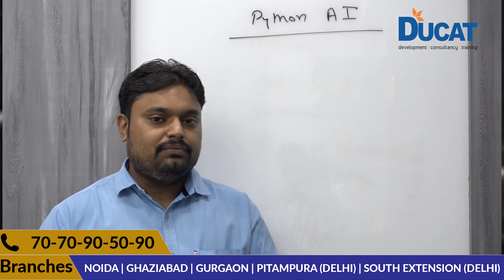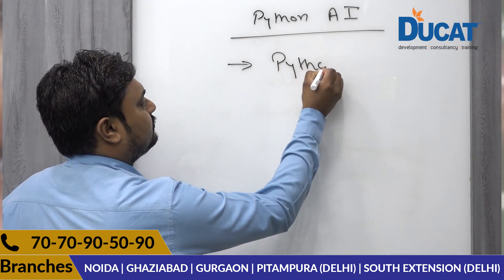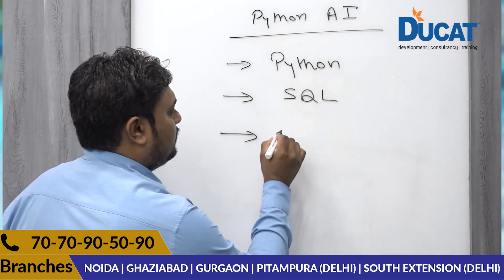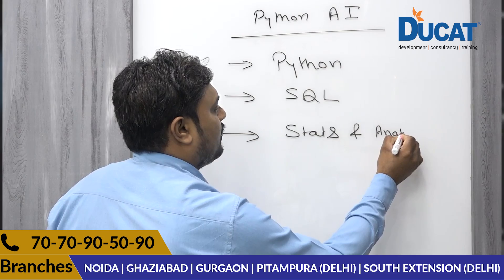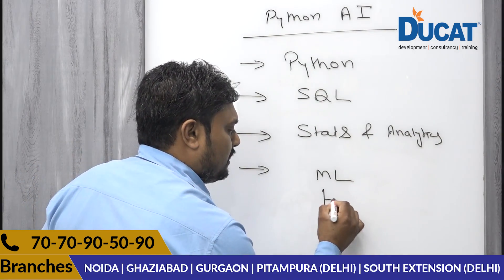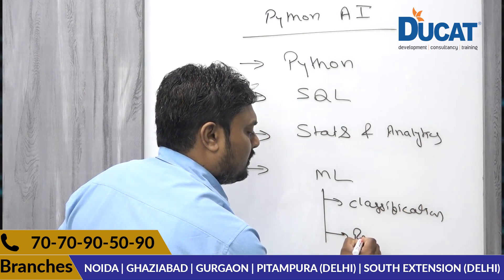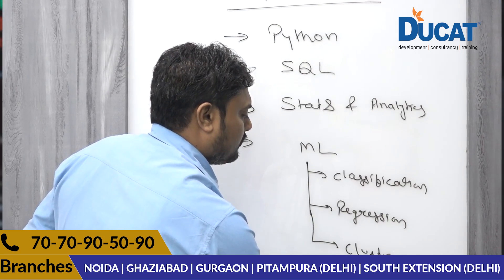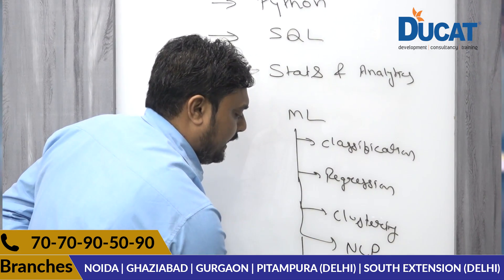In Newcast, what we offer in our AI course: the first thing you will learn is Python, the second is SQL, the third is statistics and analytics. Next is machine learning, where inside machine learning we will be doing classification, regression, and clustering. We will also cover the concepts of NLP and computer vision.